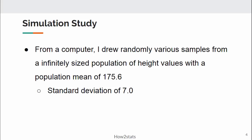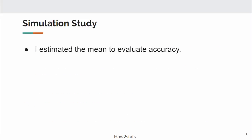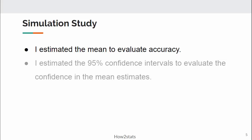So the sample sizes I drew from the computer program were as small as 10, which probably is not going to be big enough. But then the next step up was 100, and then 200, 500, 1,000, 1,500, 2,000, and then 5,000. So for each sample, from a sample size of 10 all the way to 5,000, I estimated the mean height for that sample of data to evaluate the accuracy. So I'm expecting it to see around 175.6 centimeters, but it's not going to be exactly that, especially for the smaller sample sizes.